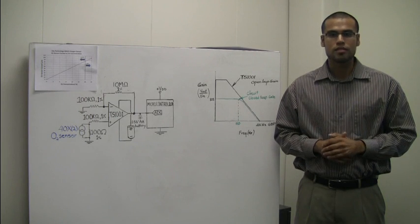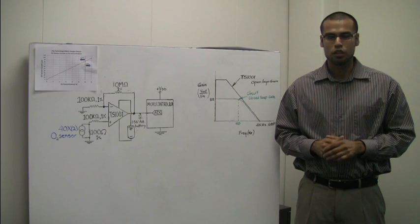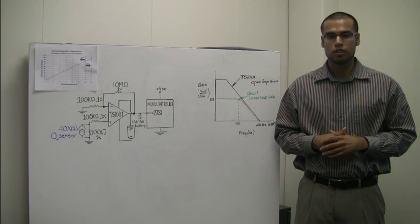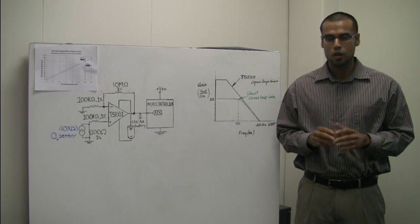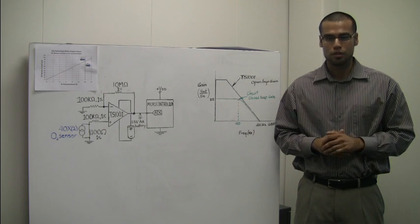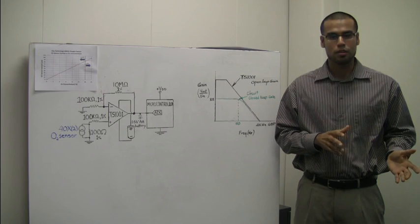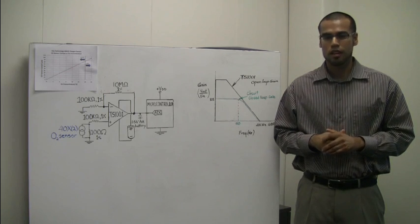In this video, I will present a simple and useful application circuit that utilizes our revolutionary TS-1001 operational amplifier, which is the world's first and only operational amplifier that can operate down to 0.8 volts and consumes only 600 nanoamps of current.